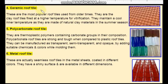Fourth one is Ceramic roof tiles. These are the most popular roof tiles used from the olden times. They are also made of clay, similar to the Terracotta roof tiles, but the difference is they are fired at a higher temperature so that they get a shiny top surface, which is called vitrification. They maintain a cool inner temperature as they are made of natural clay materials.